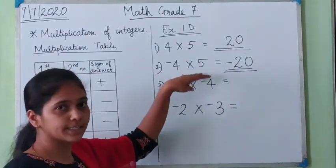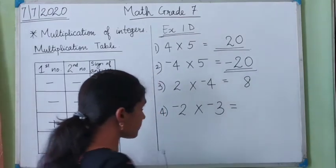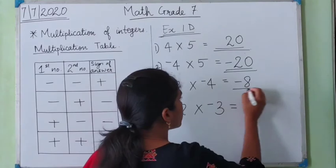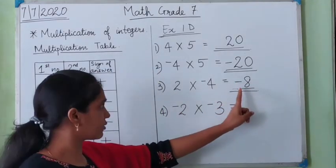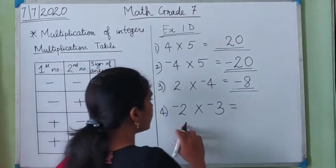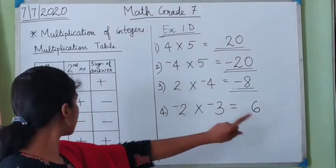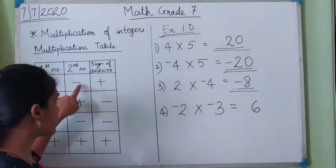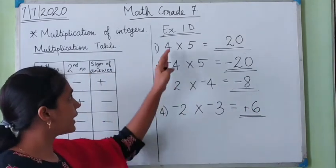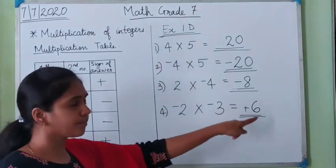The third example is similar to the second — one of the two numbers is negative. 2 into 4 is 8. The first number is positive and the second number is negative, so the sign of the answer is negative. The answer is negative 8. In the fourth example, both numbers are negative. 2 multiplied by 3 is 6. Both numbers are negative so the sign of the answer will be positive — the answer is plus 6. When one of the two numbers is negative, the answer is negative. If both numbers are either positive or both negative, the answer is positive.